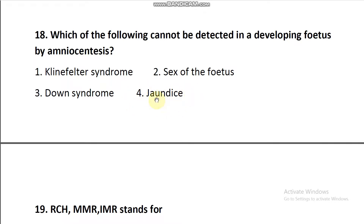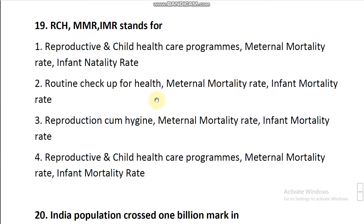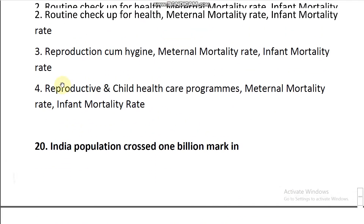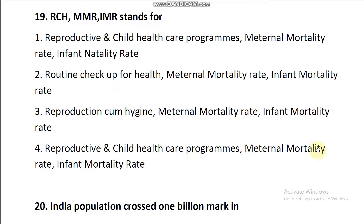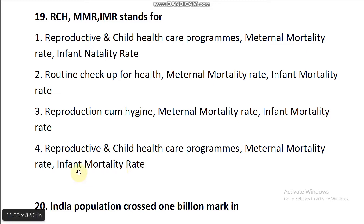Question number 19: RCH, MMR, and IMR stand for — RCH is Reproductive and Child Health Care Program, MMR is Maternal Mortality Rate, and IMR is Infant Mortality Rate. Going through the options, option number four — Reproductive and Child Health Care Program, Maternal Mortality Rate, and Infant Mortality Rate — is correct.